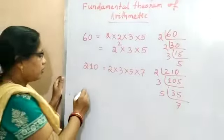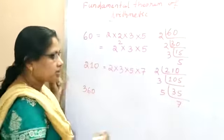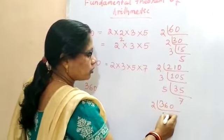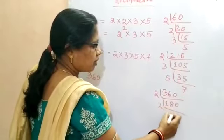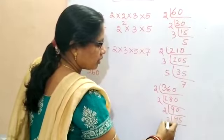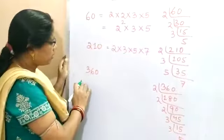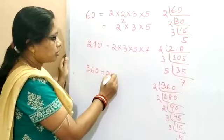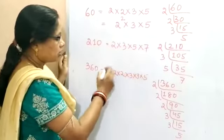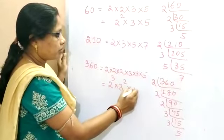Take another example: 360. What is the prime factorization of 360? First it is divisible by 2, then by 2 again giving 90, then by 2 giving 45, then by 3 giving 15, then by 3 giving 5. So the prime factorization of 360 is 2 × 2 × 2 × 3 × 3 × 5, which can be written as 2³ × 3² × 5.